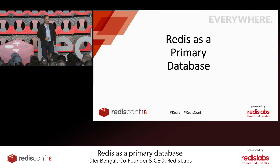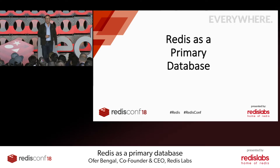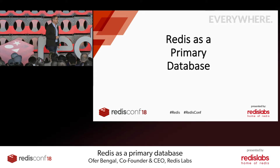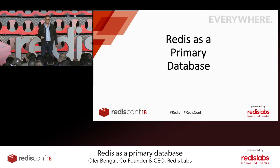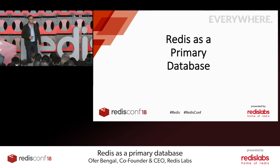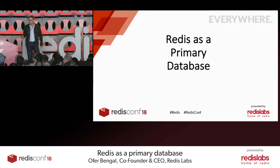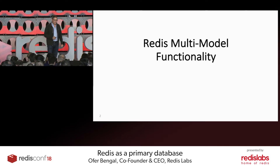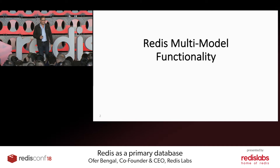Redis as a primary database. As you all know, Redis started as some sort of caching system and gradually evolved to become a database. We at Redis Labs make a lot of effort to make Redis a primary database for as many use cases as we can. Today we would like to share with you some of the innovations and demonstrations associated with Redis as a primary database. I'll start with the functionality of Redis as a multi-model database.